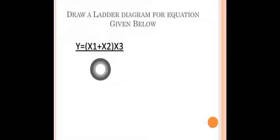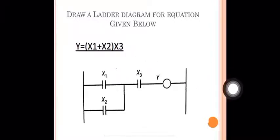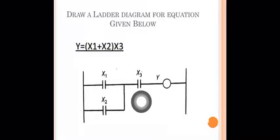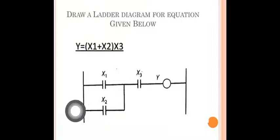So we have X1 plus X2 in an OR connection, then AND with X3. Looking at the ladder diagram: X1 and X2 are in parallel — that represents X1 + X2. Then X3 is in series with that parallel combination. That gives us Y = (X1 + X2) · X3.